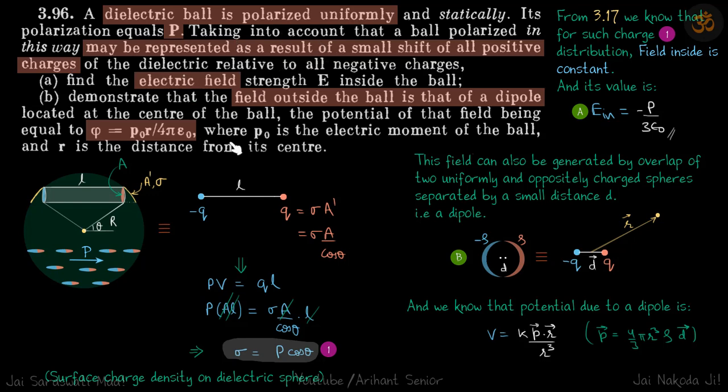If you are a little bit confused about what it means by all this I suggest you look at problem number 3.17 first. So there we have done something similar on the sphere. In fact, from 3.17 we know that for such charge distribution, the field inside is constant and its value is E_in = -P/(3ε₀).